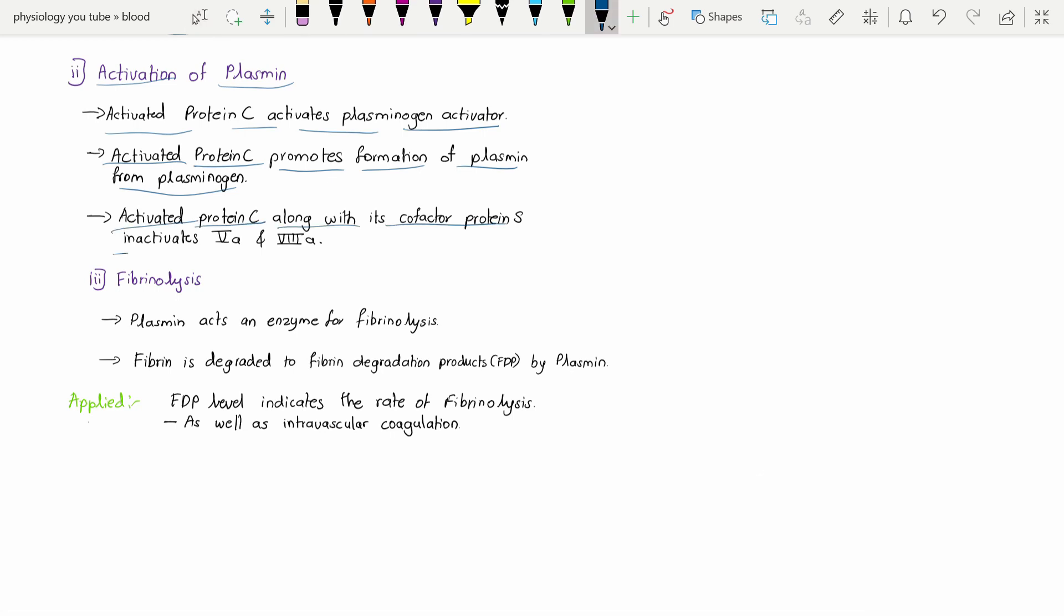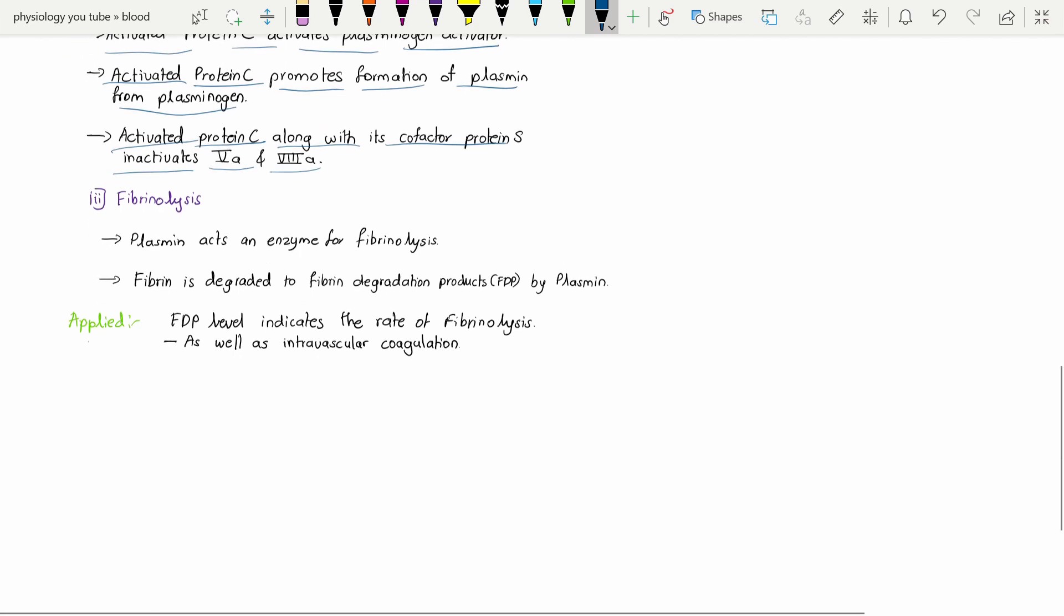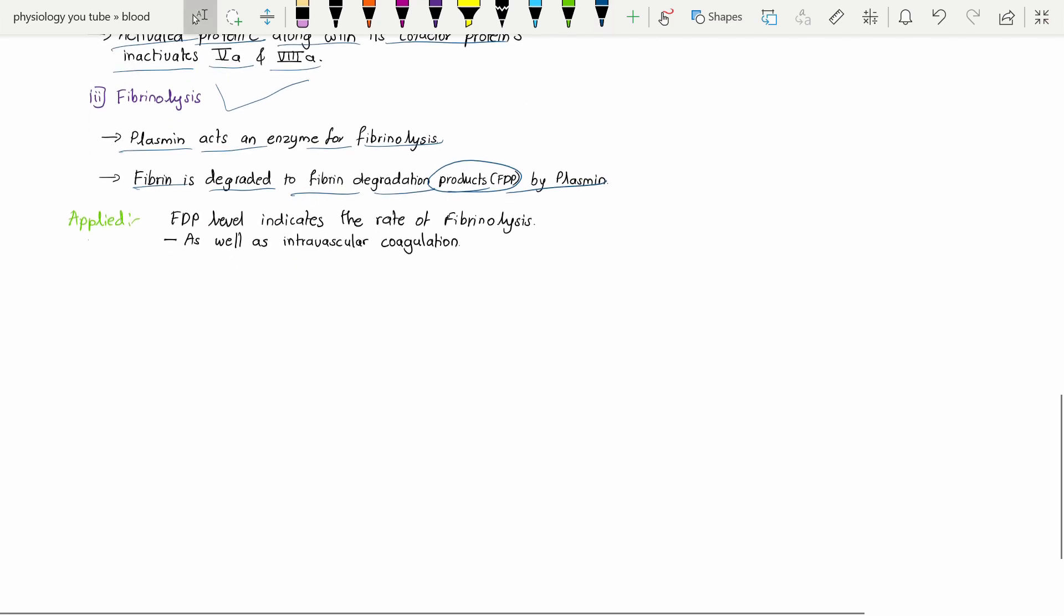The final step is fibrinolysis. The plasmin acts as an enzyme for the fibrinolysis. The fibrin is getting degraded to form the fibrin degradation products by the plasmin.